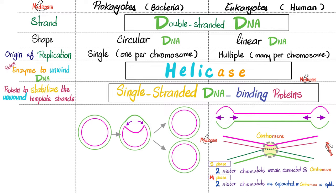Since bacteria have circular DNA, the replication fork opens and proceeds in both directions around the circle until the two forks meet each other, producing two DNA molecules instead of one.